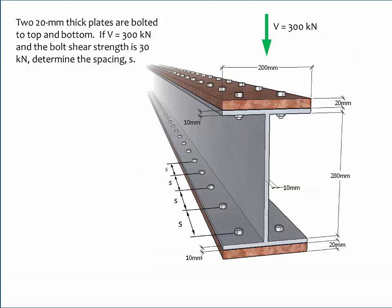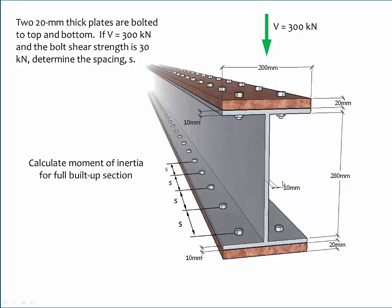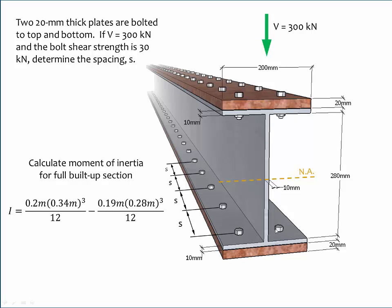Let's now consider an example problem. This is a built-up beam composed of an I-shape and two plates. Two 20-millimeter thick plates are bolted to the top and bottom. The internal resultant shear force V is 300 kilonewtons, and the bolt shear strength is 30 kilonewtons. We need to determine the spacing S. The first step is to calculate the moment of inertia for the full built-up section, which is symmetrical about its neutral axis — computed as the moment of inertia of the bounding block minus the interior cutouts on either side of the beam web.